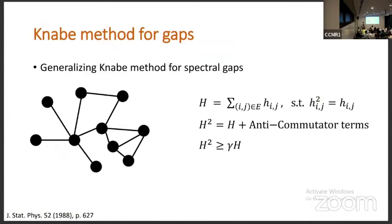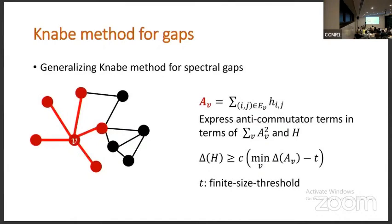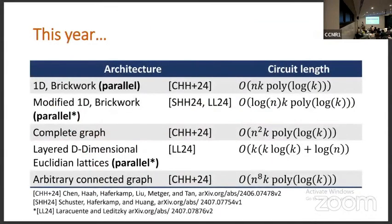The other method is kind of easier to explain. You have a Hamiltonian, you square the Hamiltonian, you get some bad anti-commutator terms. You want to get rid of those. So what you do is you define a new operator A, which is just the Hamiltonian on a few sides coming out of a vertex. And then you rewrite the bad terms in terms of the new operator squared and the old Hamiltonian H. And just basic algebra gives you a lower bound on the spectral gap. But for this method to work, you need to find numerically what is the spectral gap of a Hamiltonian on a graph that looks just like the one colored in red. Once you do that, the bounds come straight through. These are techniques in the physics literature that we use.